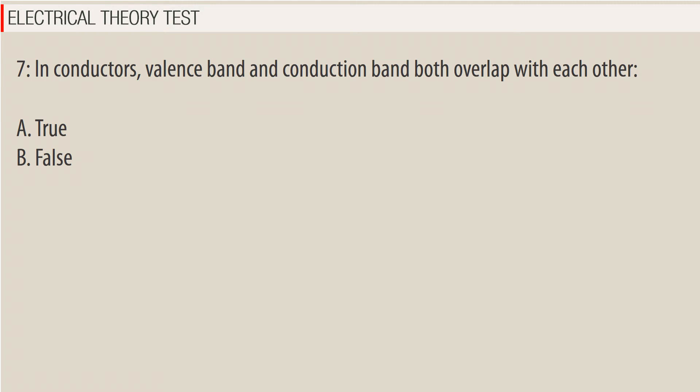Question 7: In conductors, do the valence band and conduction band both overlap with each other? A. True. B. False.